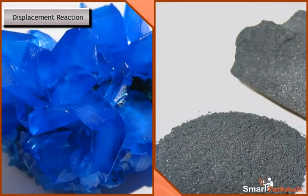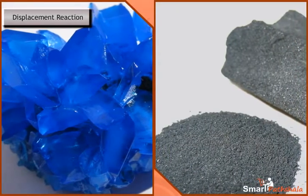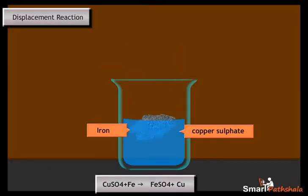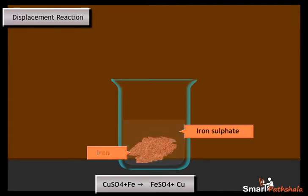Now let us experiment using copper sulphate and iron. Take a beaker and add copper sulphate and a small piece of iron in it. After some time, you can find the formation of iron sulphate as the iron displaces the copper from copper sulphate, and copper precipitate is formed at the bottom of the beaker.